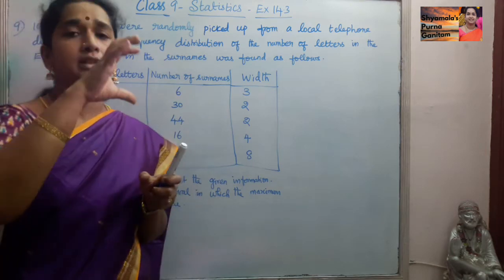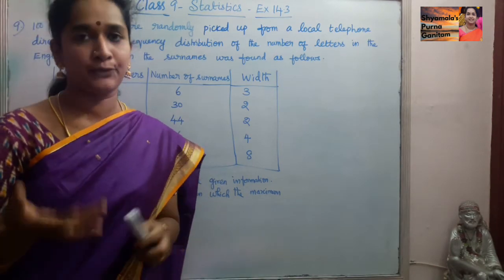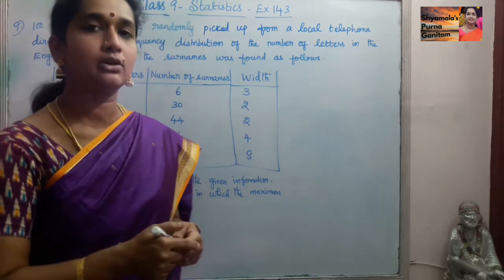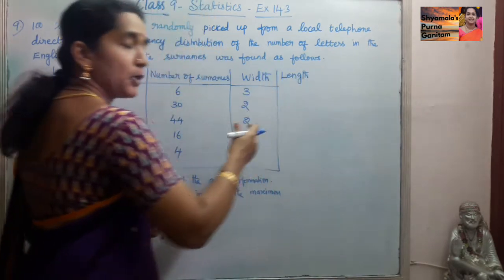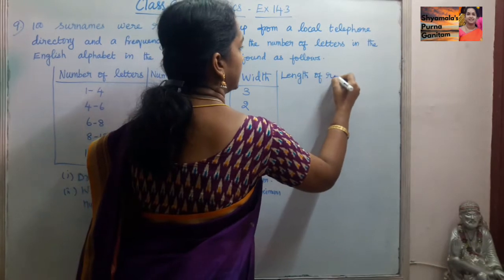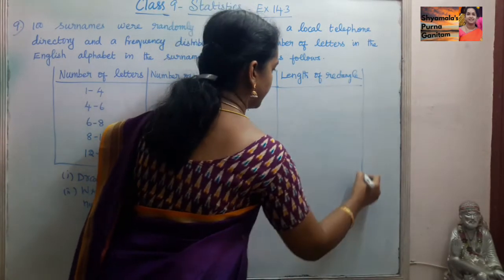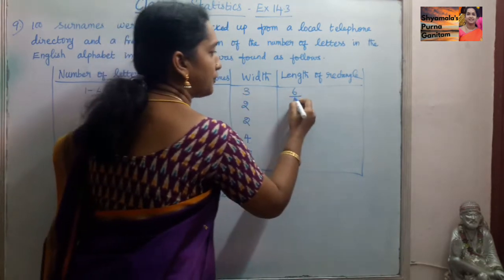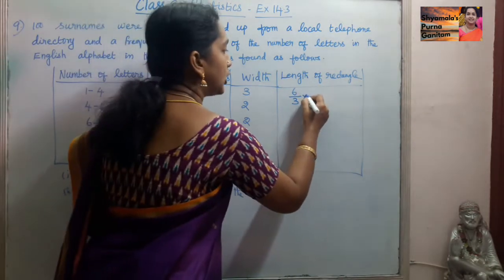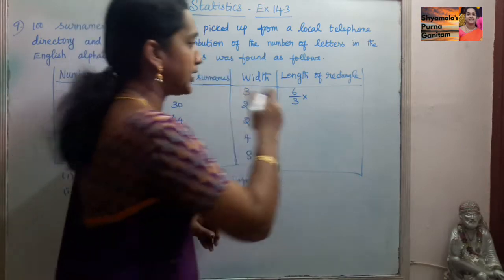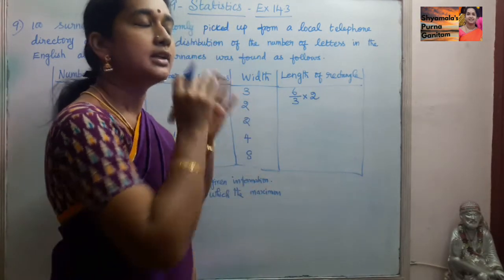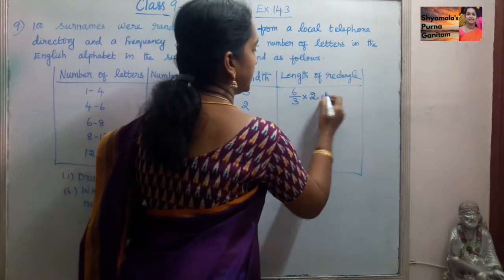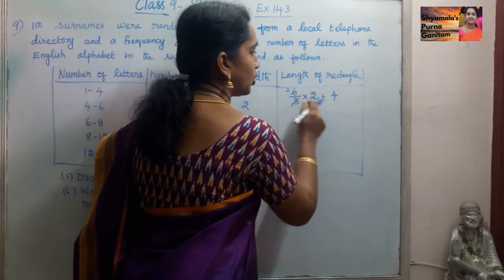Since the width varies, the length of the rectangle we draw will be different. To make it proportional to the frequencies, we need to do some calculation. The length of rectangle equals frequency of that particular class divided by width of that class, multiplied by the minimum width. The minimum width for this data is 2. So for 1 to 4: 6 divided by 3, times 2 equals 4.